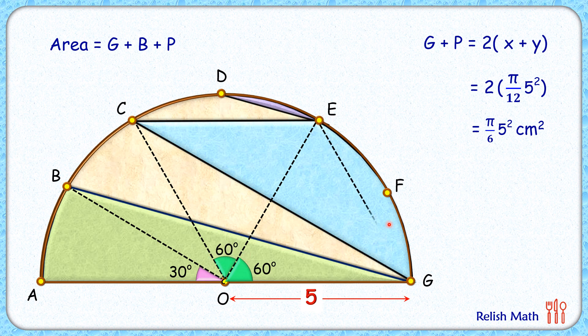Let's join EG. Now if we look carefully, OC and OE are the radius and thus equal. Applying angle sum property, we'll get angle E and angle C as 60 degrees each. By the same logic, this angle E will also be 60 degrees.